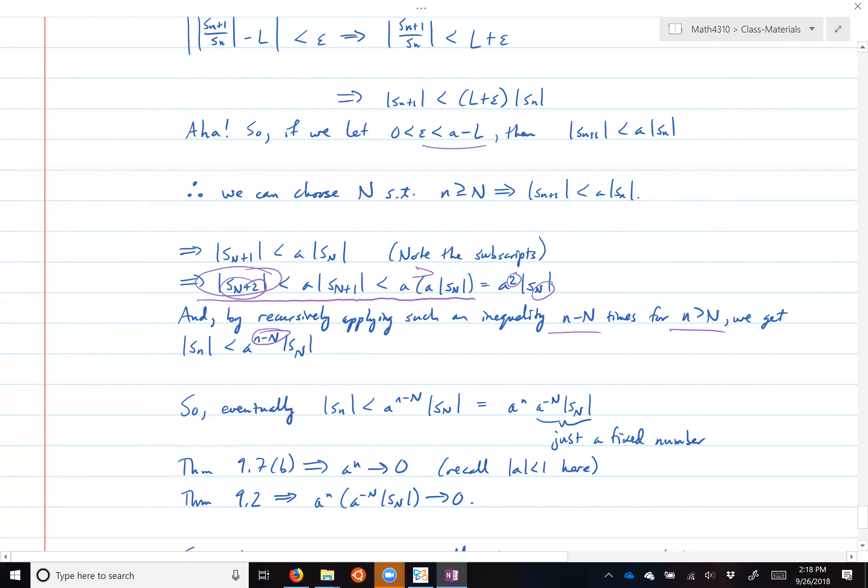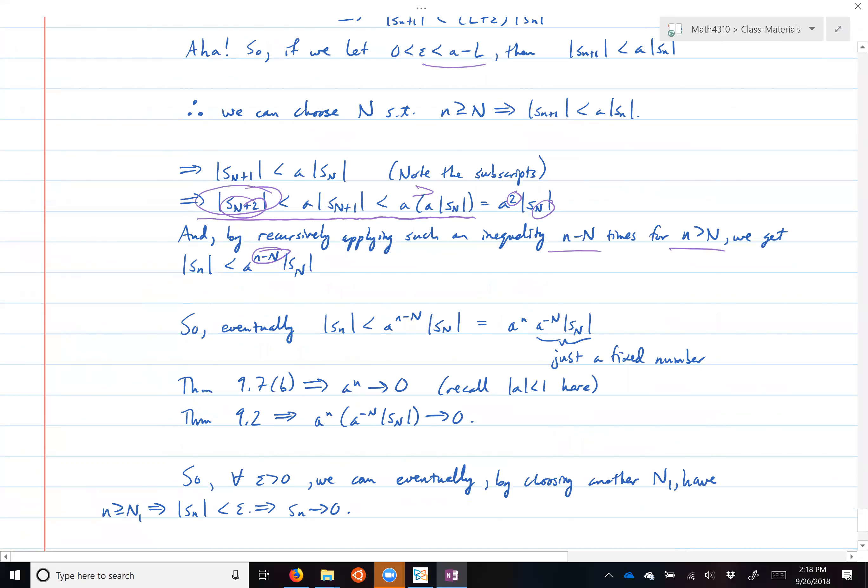So then that means eventually, this is the scratch work so it's not meant to be vague, but you're not being so precise, you'd write this more carefully in a proof. Eventually, for some choice of capital N, you establish this relationship holds for all the little n's greater than or equal to capital N.